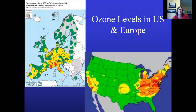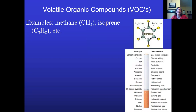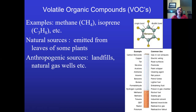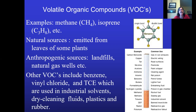We're not the only country with ozone issues — anywhere with lots of cars and industry will have them. As for VOCs — volatile organic compounds — when you think organic compounds, think hydrogen and carbon. Examples include benzene, vinyl chloride, TCE, industrial solvents, dry cleaning fluids, plastics, and rubber. Various natural sources exist too, such as emissions from leaves of some plants. As plastics and rubber break down, they release those VOCs into the atmosphere.